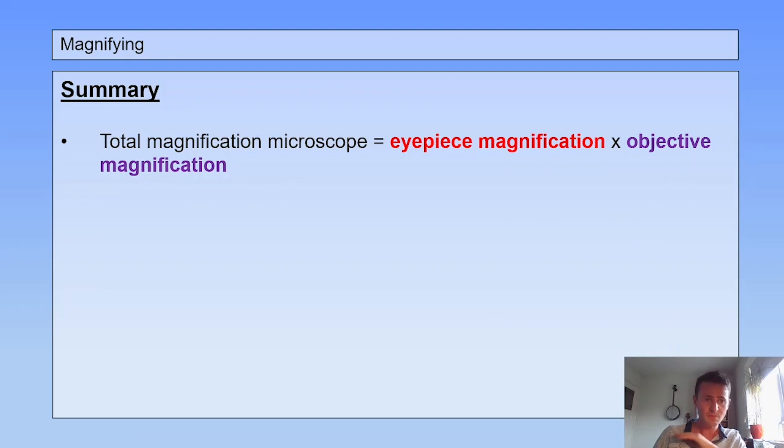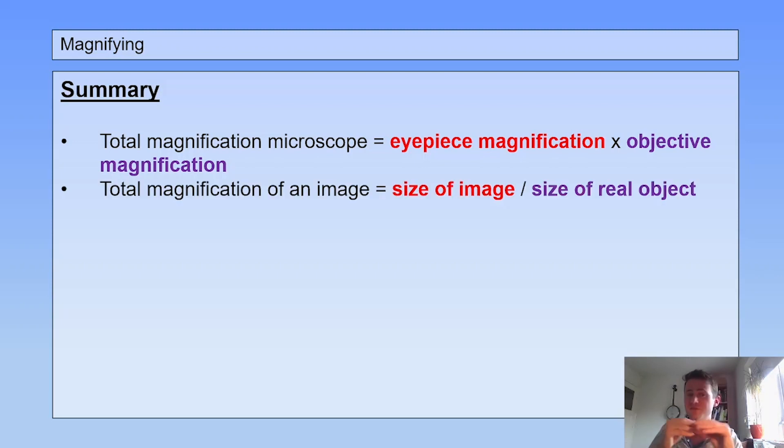So the total magnification of the microscope is the eyepiece magnification times objective magnification. And the total magnification of an image is the size of an image divided by the size of the real object.